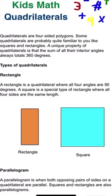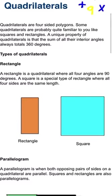For example, squares and rectangles. I highlighted the importance that a unique property of quadrilaterals is that the sum of all their interior angles always totals to 360 degrees.